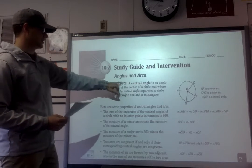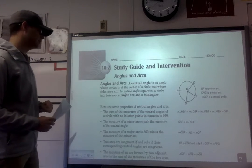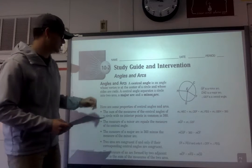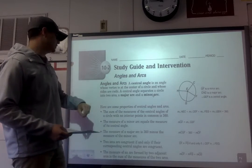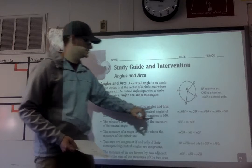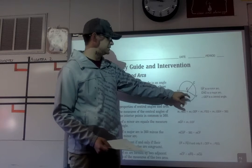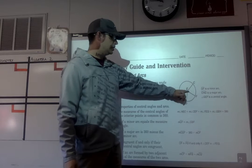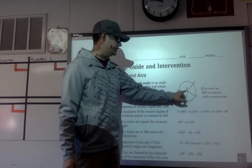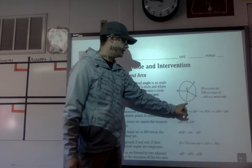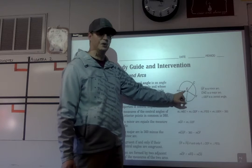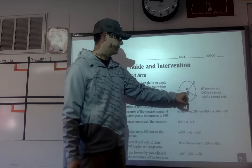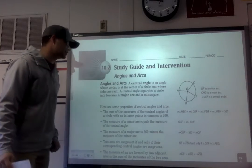So angles and arcs: a central angle is an angle whose vertex is at the center of a circle — pretty self-explanatory — and whose sides are radii. So in this case, a central angle's vertex would need to be E. We could have sides of EH and EG to make an angle there. The sides are both a radius, and the vertex is a central angle.